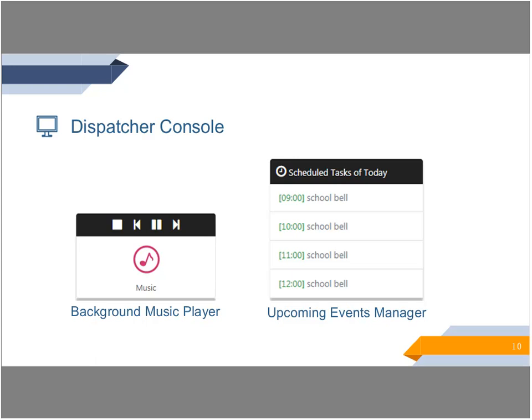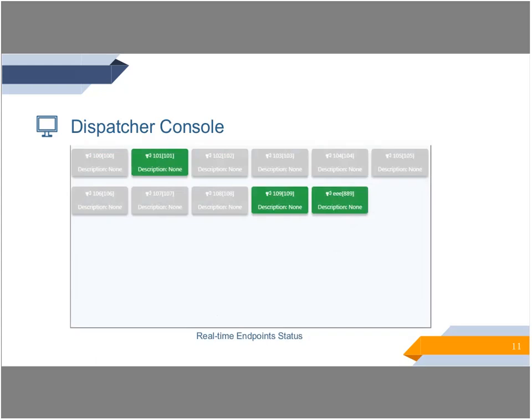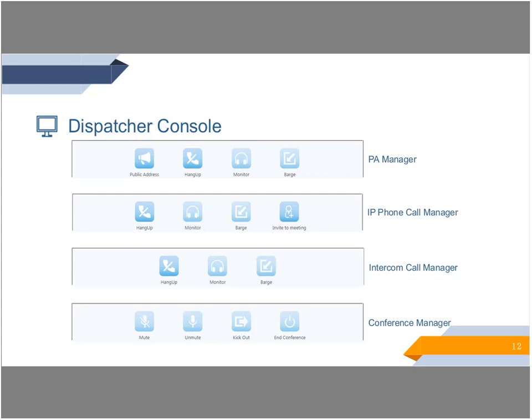So it's very convenient. The real-time endpoint status can be monitored by the dispatcher user. When there is a SIP paging gateway or IP phone endpoint failure, the dispatcher user will get notified immediately — unlike the classic PA system where you have no idea if any speakers have failed. On the dispatcher's console, the dispatcher user may control PA and intercom calls directly. Here are the manager menus for controlling PA, IP phone calls, intercom calls, and some other features.